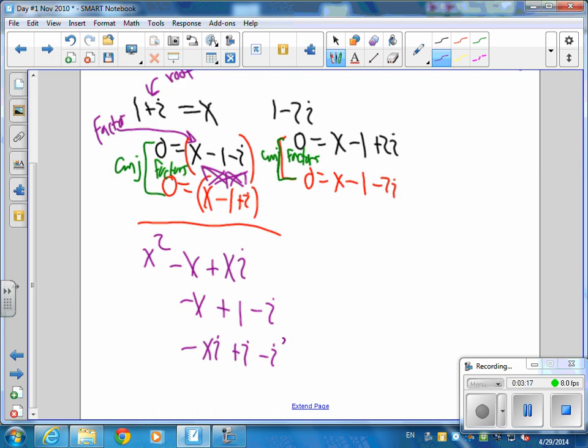What is negative i times positive i? Negative i squared. But what is negative i squared the same as? 1. Yep. So it will be plus 1.